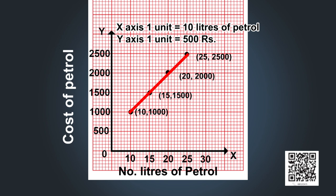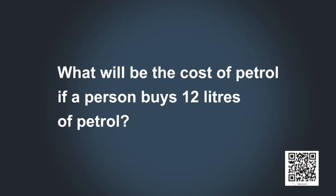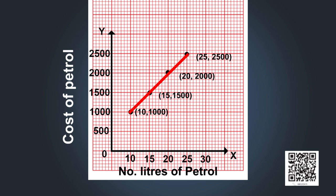Now we have a linear graph. We can use it to estimate the cost when a person buys 12 litres of petrol. Locate 12 on the x-axis, follow the vertical line through 12 until it meets the graph at point P, then draw a horizontal line from P to the y-axis. The cost of 12 litres of petrol is 1200 rupees.